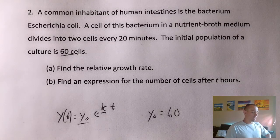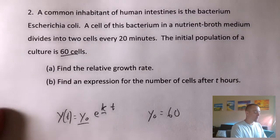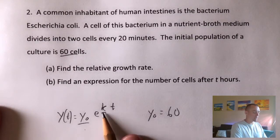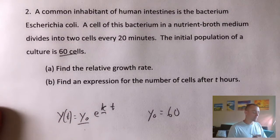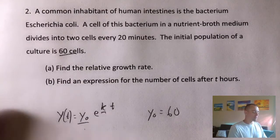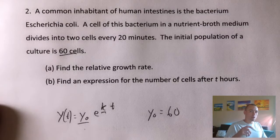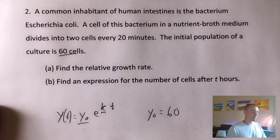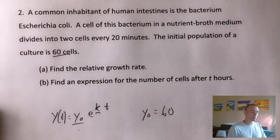So what we want to do is use this formula to come up with an expression for the population of cells. Obviously we already know y sub zero. Once we figure out k, that k is going to tell us exactly the answer to part A, the relative growth rate, because k just simply represents the relative growth rate. So in order to figure out what that k should be in this formula, what we want to do is use another point that we know lies on this function, or another piece of data that tells us how many cells are in this culture at a certain time.